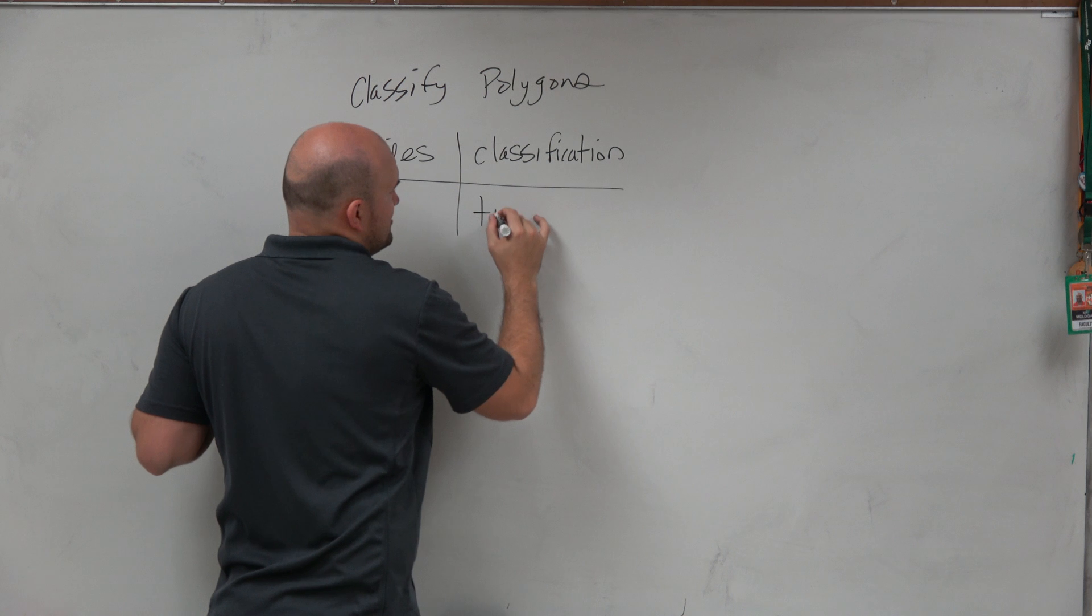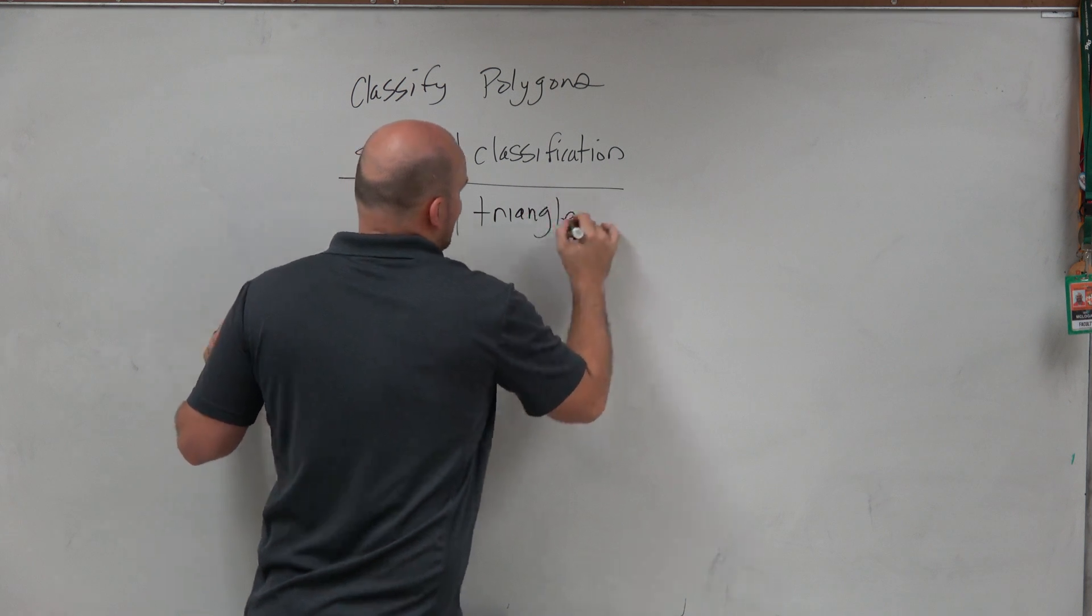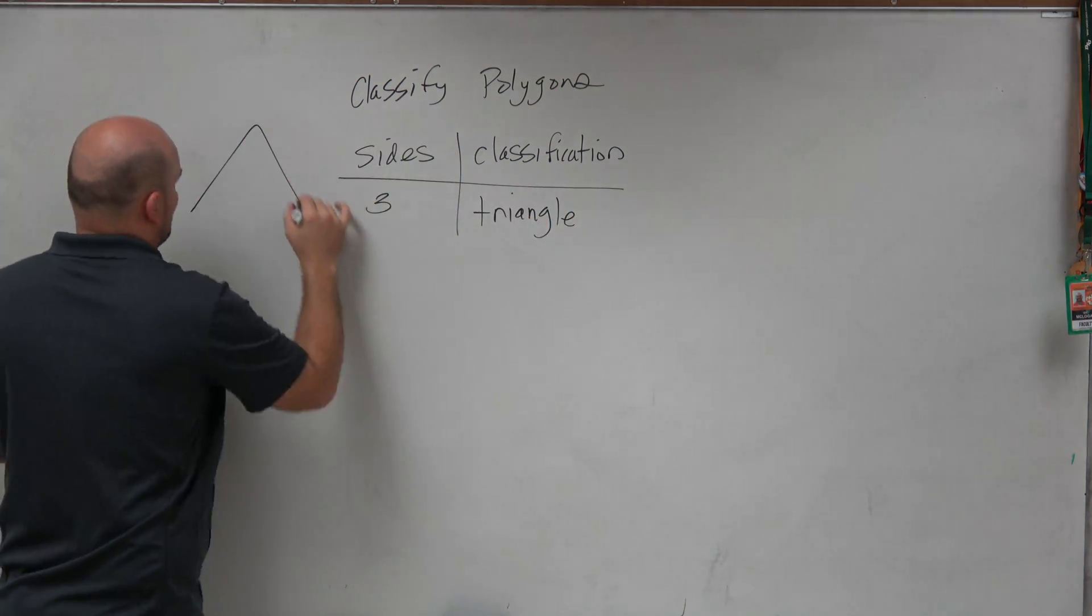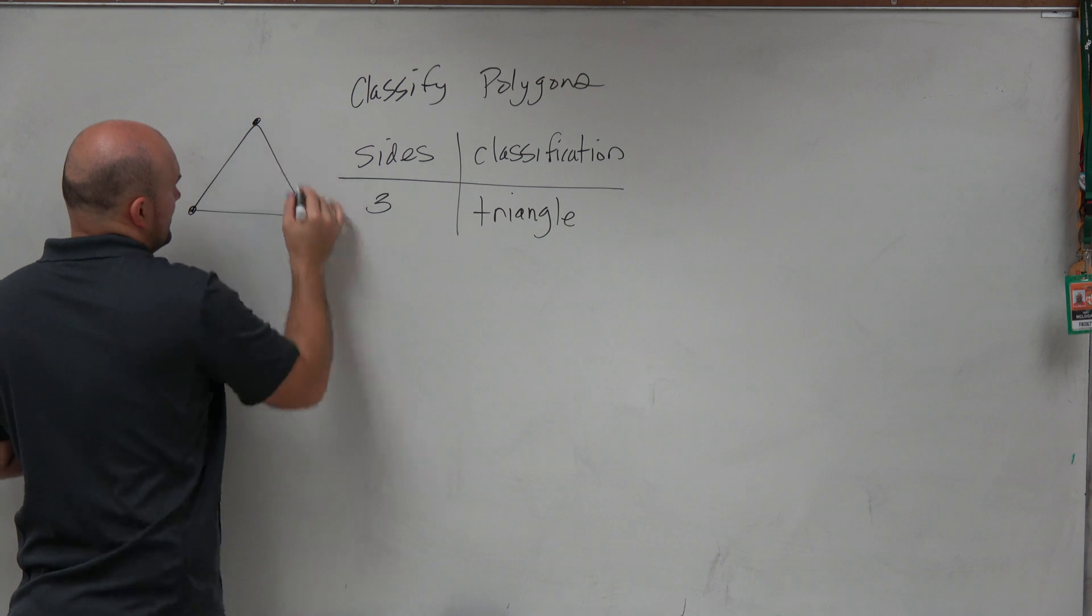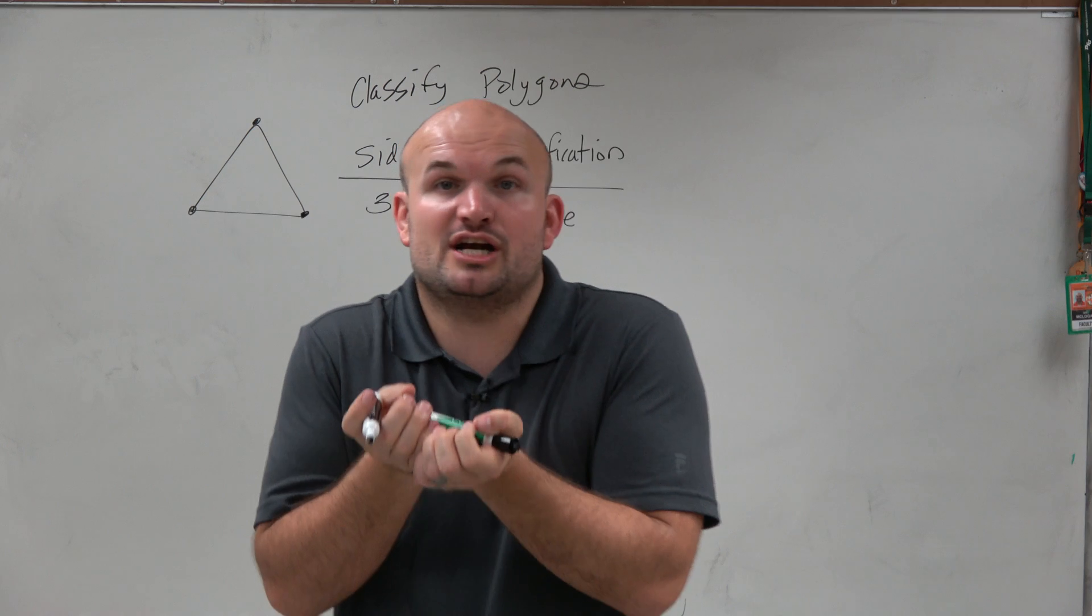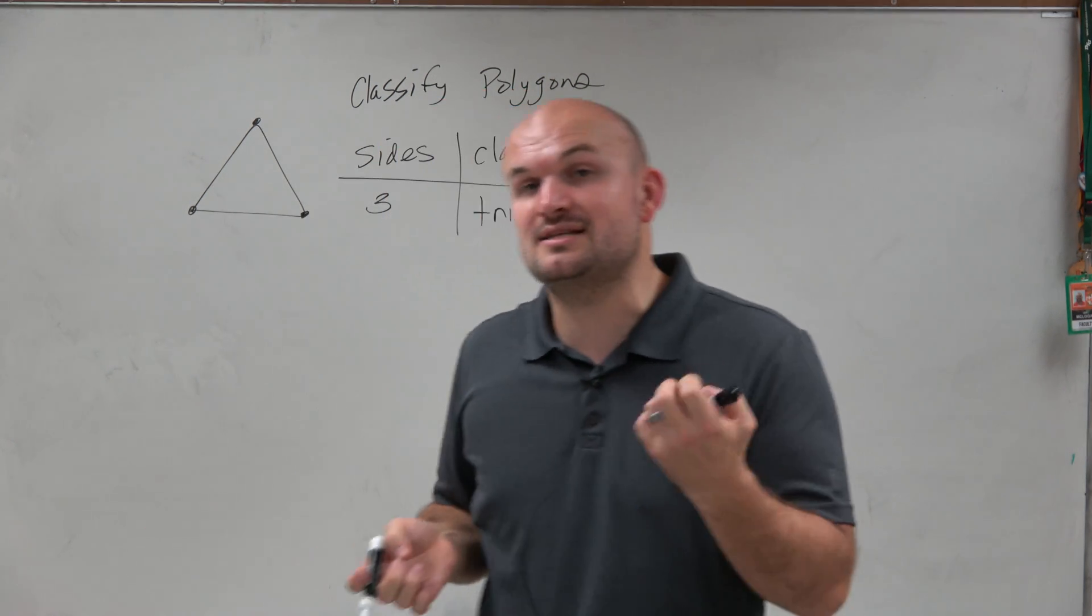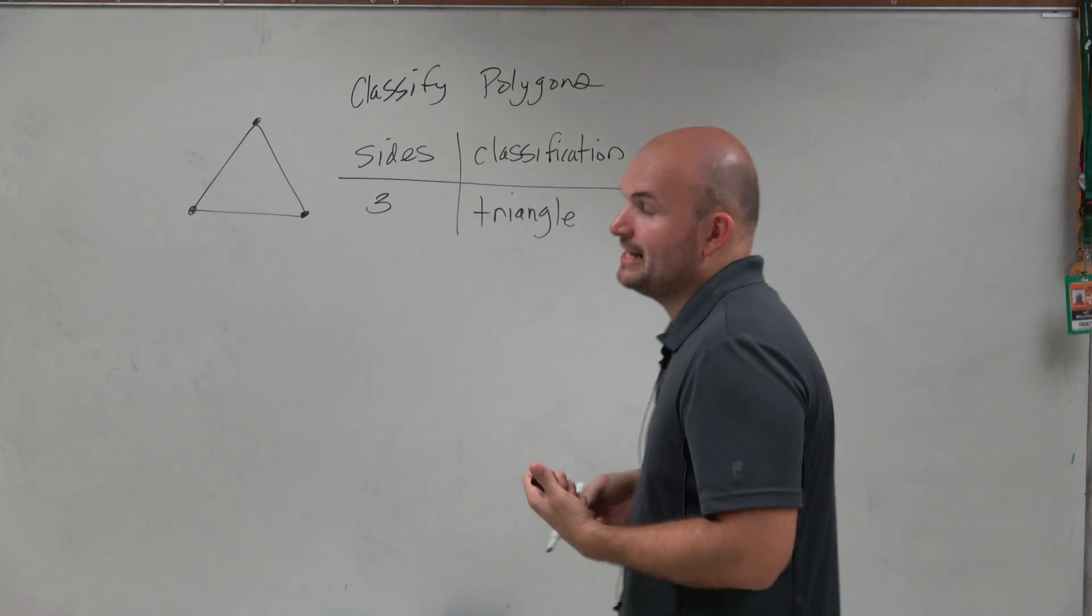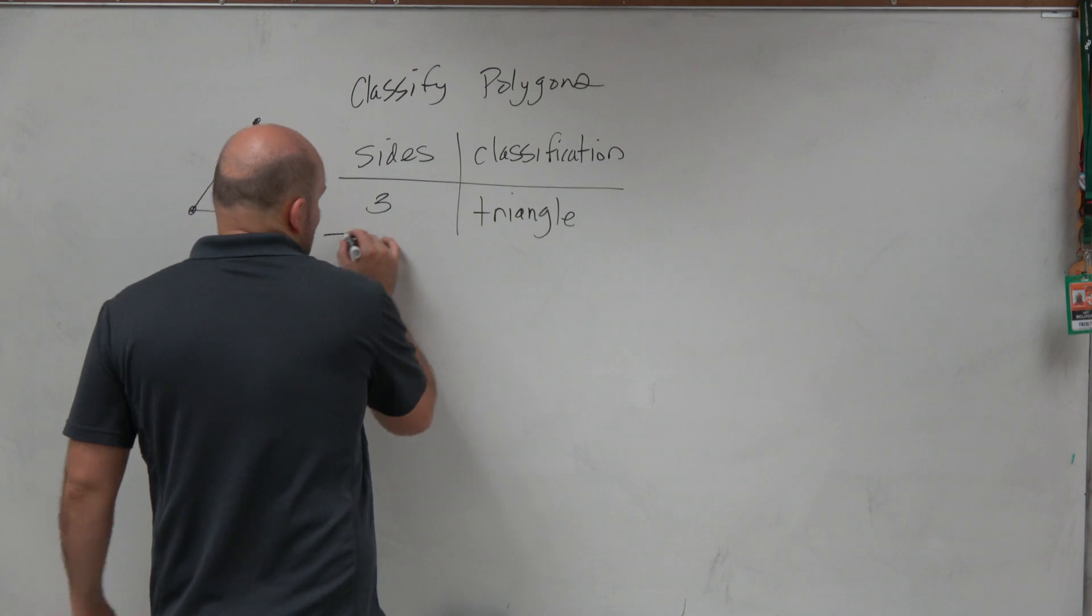So if we have three sides, that's going to be a triangle. You're going to have three sides, and that's the foundation here of our polygons. That's the smallest, the least number of sides we can use to create a polygon.